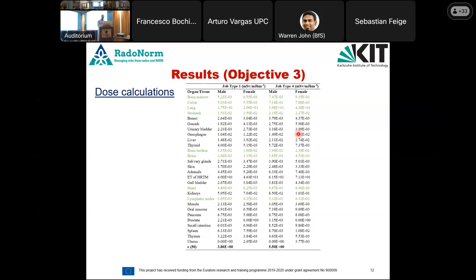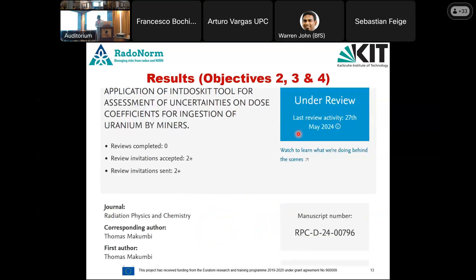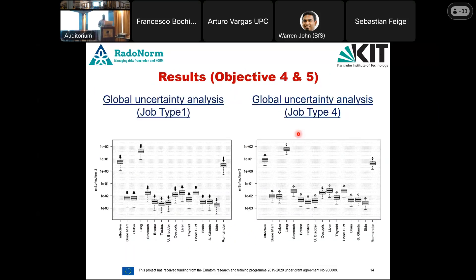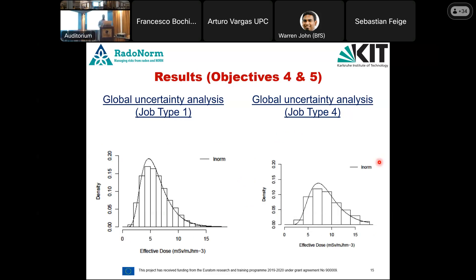For this work, we are mainly interested in doses to the bone marrow, colon, lung, stomach, bone surface, brain, heart, and lymphatic nodes, highlighted in green. Results for objectives two, three, and four were compiled in a manuscript submitted to the Journal of Radiation Physics and Chemistry, currently under review. The lung dose is highest, and the dose distribution was characterized by a lognormal distribution for both job types.